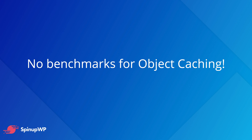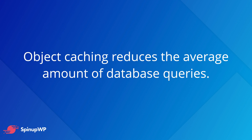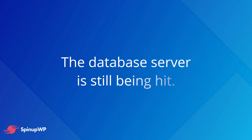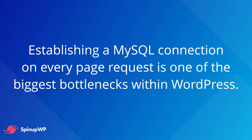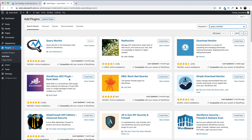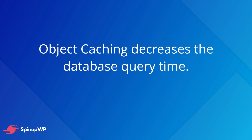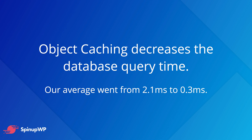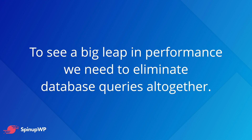I'm not going to run the benchmarks again right now as the results won't have dramatically changed yet. Although object caching reduces the average number of database queries — say the front page has 22 and object caching brings it down to about two — the database server is still being hit. Establishing a MySQL connection on every page request is one of the biggest bottlenecks in WordPress. Using a plugin like Query Monitor, we found that object caching decreased our query time from 2.1 milliseconds down to just 0.3 milliseconds. But to see a big leap in performance and a big decrease in resource usage, we must avoid a MySQL connection and PHP connection altogether.